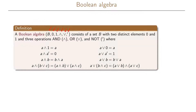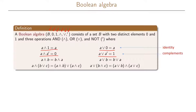This Boolean algebra has identity operations which say that A AND 1 equals A, and A OR 0 equals A. Then we have the complement laws which say that A AND NOT A equals 0, and A OR NOT A equals 1.